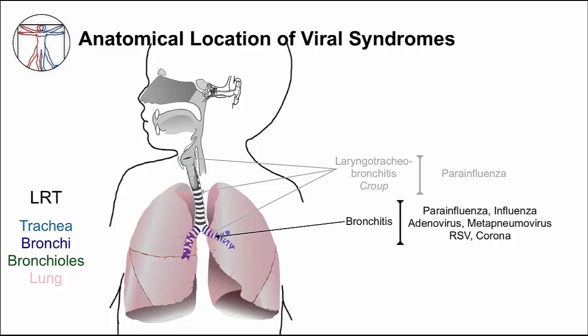Lower down the lower respiratory tract are the large bronchi that branch off the trachea at the level of the carina. Infection of bronchi causes bronchitis, and inflammation of the mucous membranes of the bronchi leads to a lot of secretions that need to be cleared by coughing. Patients with bronchitis have a lot of coughing, and this cough can actually last for many weeks. Any of the common respiratory viruses can cause bronchitis.